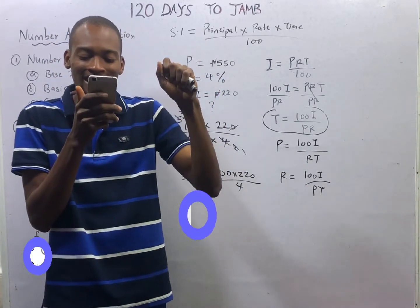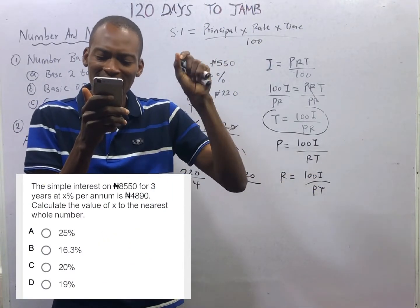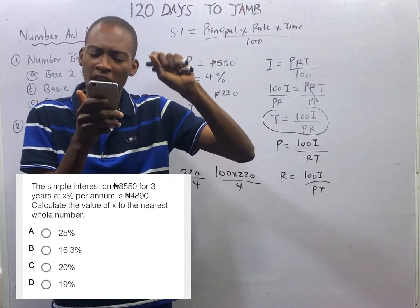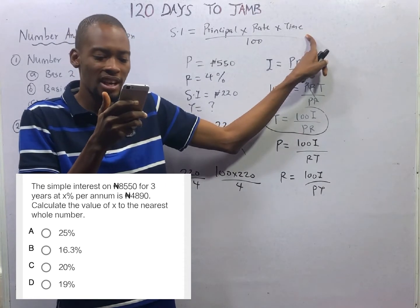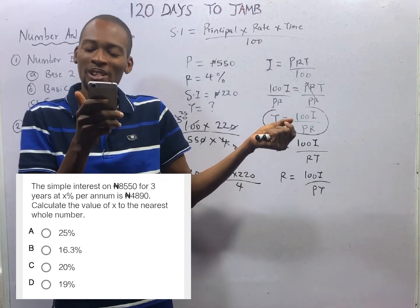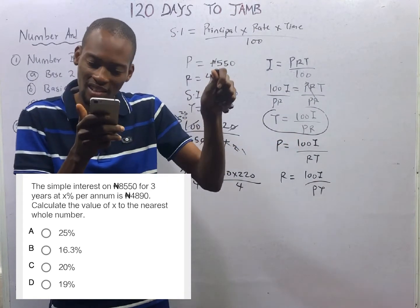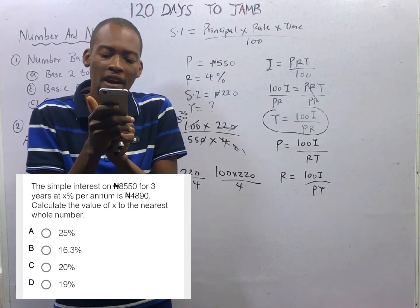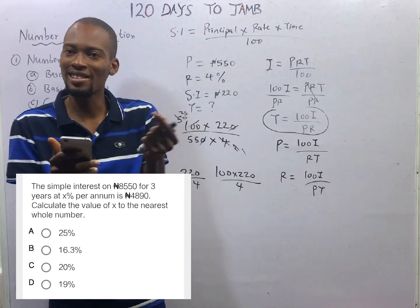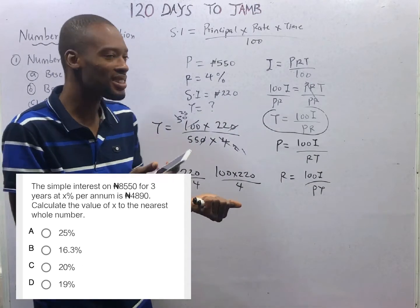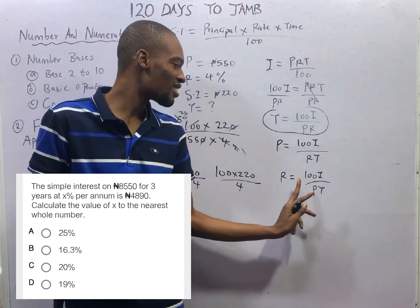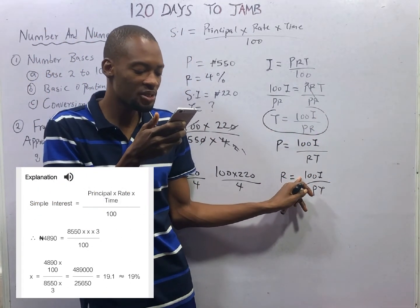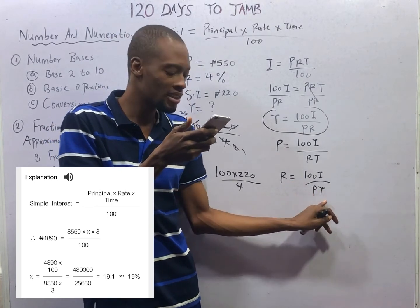The simple interest on eight thousand five hundred and fifty naira for three years at eight percent per annum is four thousand eight hundred and ninety naira. The principal is 8,550 naira, time is 3 years, and the simple interest is 4,890 naira. They say at S% per annum — the percentage after S means S is the rate, so we need to find the rate. Rate equals 100 times interest over principal times time: that is 100 times 4,890 over 8,550 times 3.